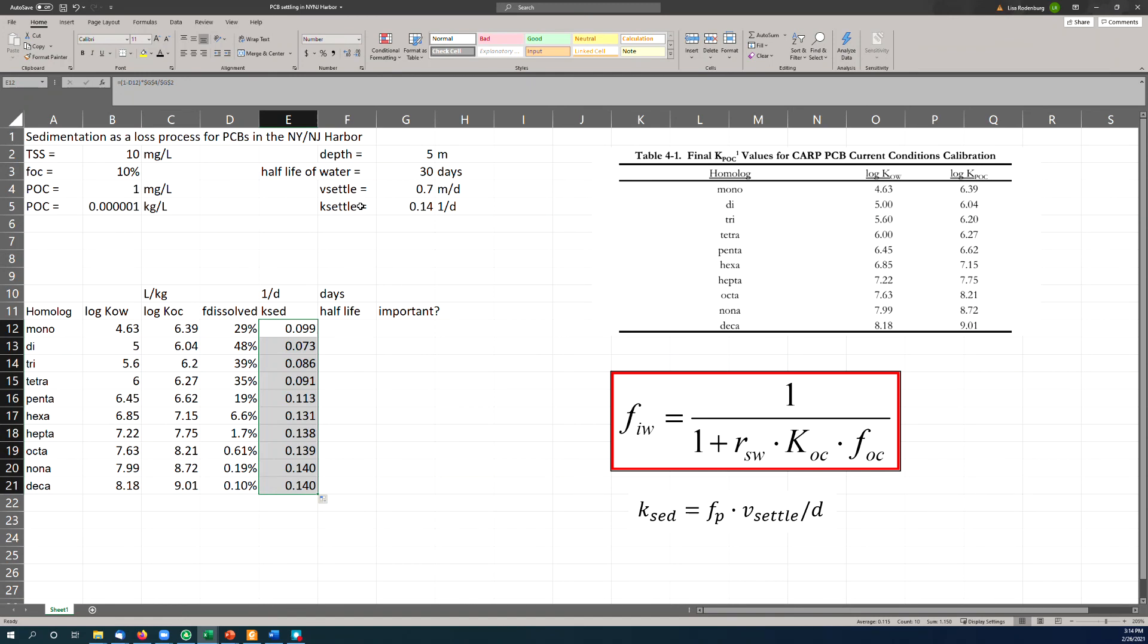The settling rate, if you take this V_settle and express it in the form of a first order rate constant, i.e., you divide by the depth, the settling velocity or the settling rate constant for the particles is 0.14 per day. And because deca is almost 100% sticking to the particles, its K_sed is also almost exactly the same, 0.14 per day. But for some of these others, like mono, a lot of it is not absorbed to particles. A big fraction of it is not absorbed to the particles and so it's not settling. So its K_sed is slower. It's 0.099 per day.